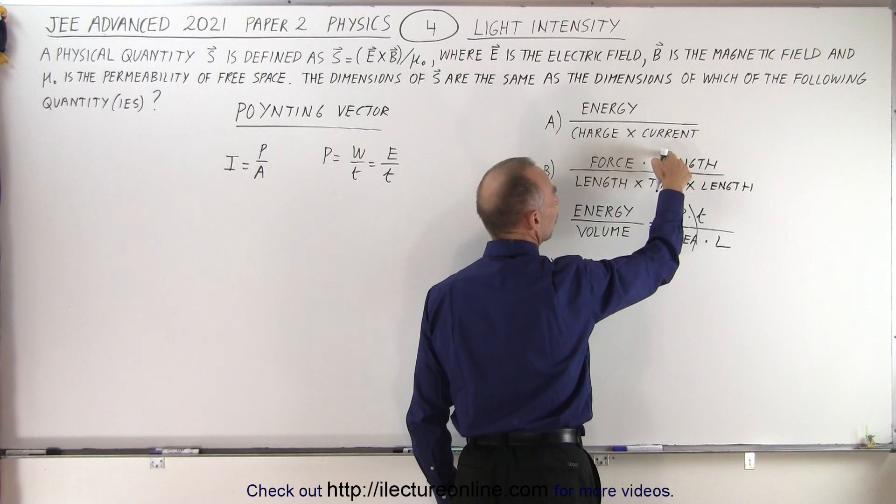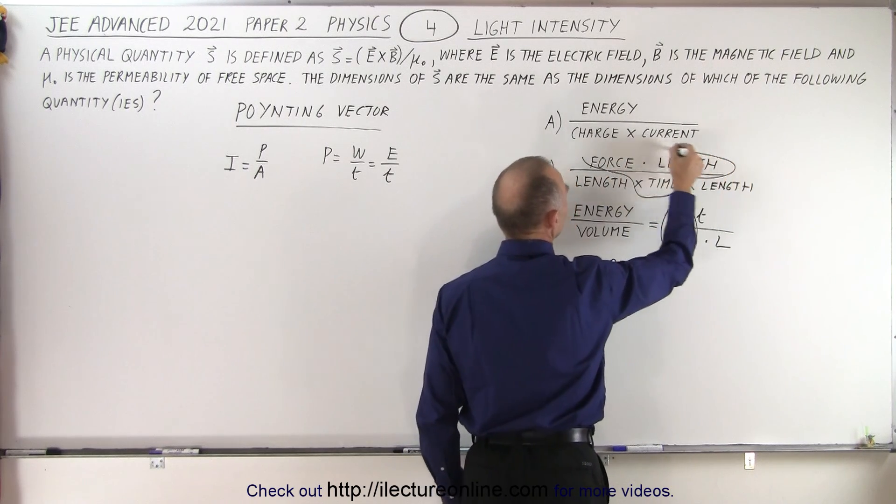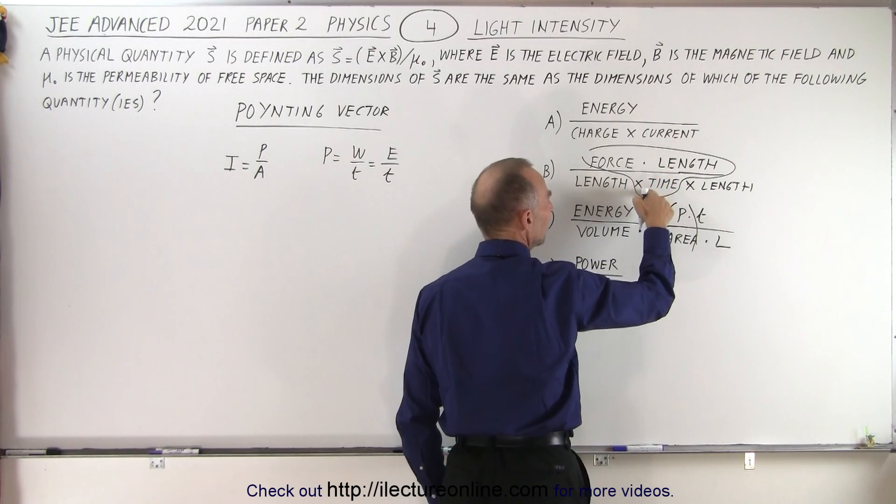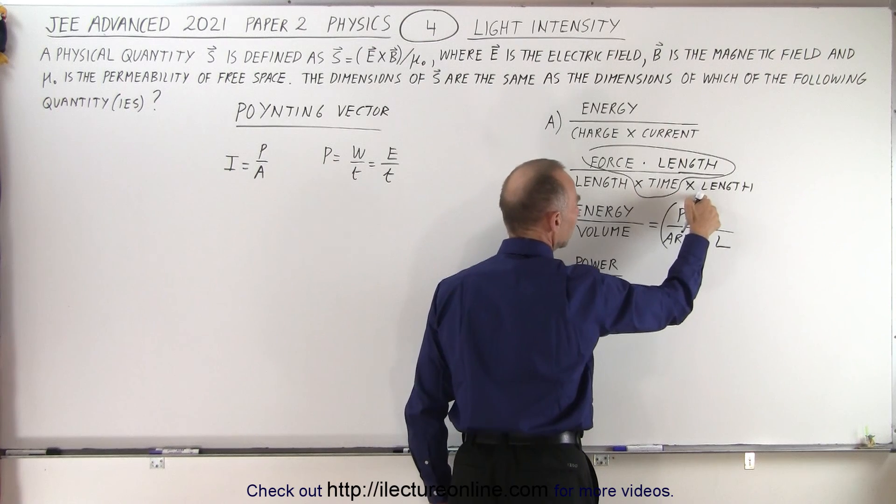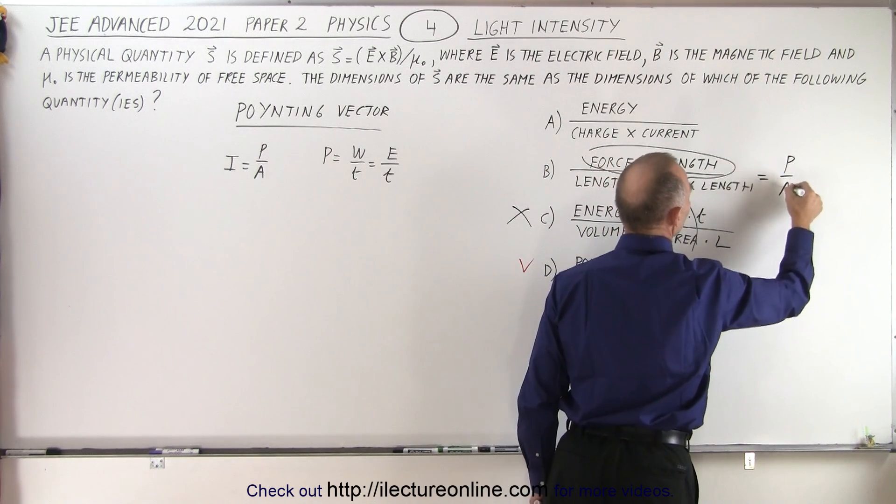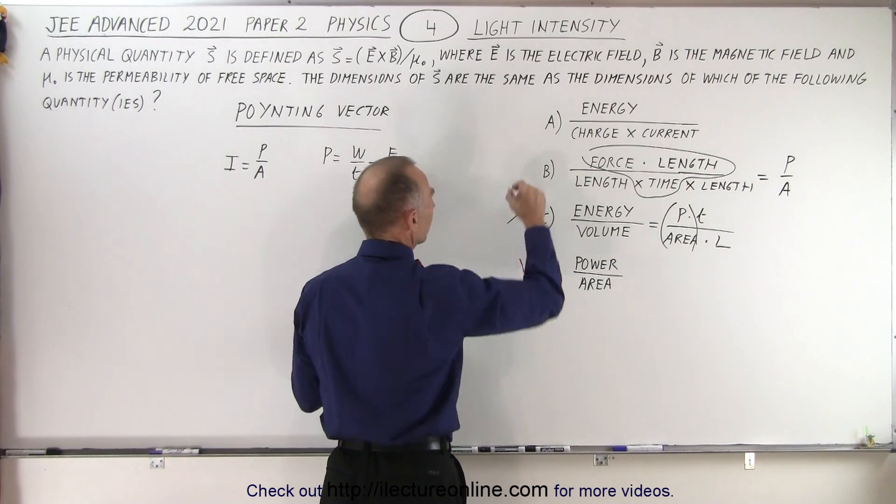Well, force times length is work divided by time is power. So these three here in this order, force times length, that would be force times distance is work, divided by time gives me power. And length times length gives me area. So this is equal to power divided by area. And so therefore, this also matches what I'm looking for.